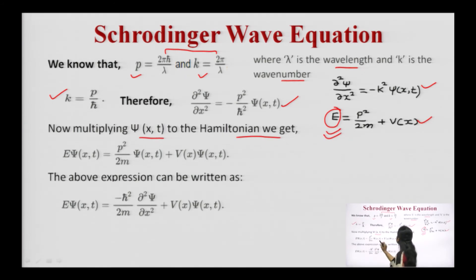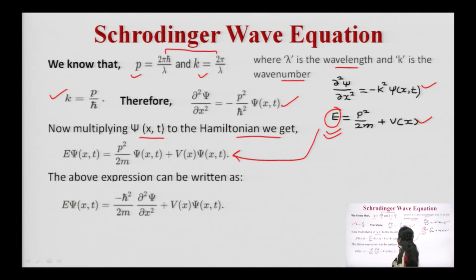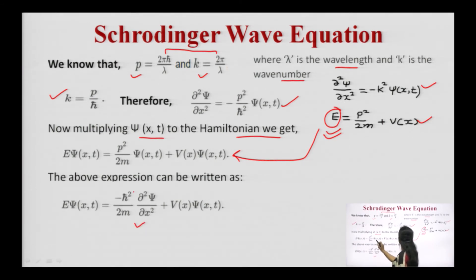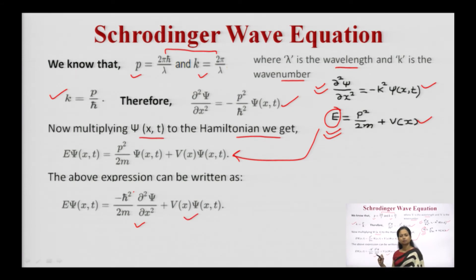This equation can be rewritten as: −(ℏ²/2m) ∂²ψ/∂x² + V(x)ψ(x,t) = Eψ(x,t). The energy of a matter wave can be written as E = ℏω. Therefore, Eψ(x,t) = ℏω ψ(x,t).